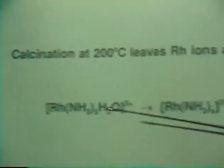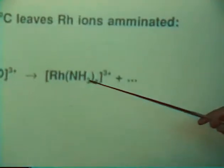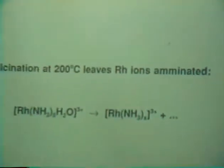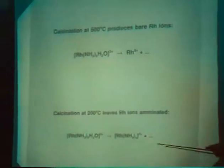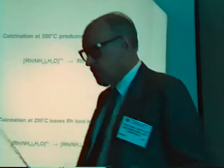Then the zeolite has an acidity. However, you can direct the calcination at a temperature where all the superfluous water is removed, but enough of the pentaamine complex is retained that you have not a naked ion, but still partially — for instance — a triamine-ligated ion. And if you reduce that with hydrogen, you do not get protons, but you get ammonium ions.